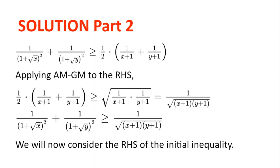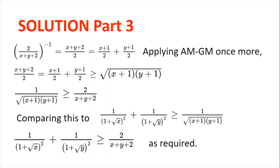Now it is not obvious what else we can do to the right-hand side of this inequality, so we go back to the initial inequality and consider the right-hand side. We can't do much with 2 divided by (x plus y plus 2) directly, but we can work with its reciprocal: (x plus y plus 2) divided by 2, which can be rewritten as (x plus 1)/2 plus (y plus 1)/2. Applying AM-GM, we get (x plus y plus 2) divided by 2 is greater than or equal to the square root of (x plus 1)(y plus 1).